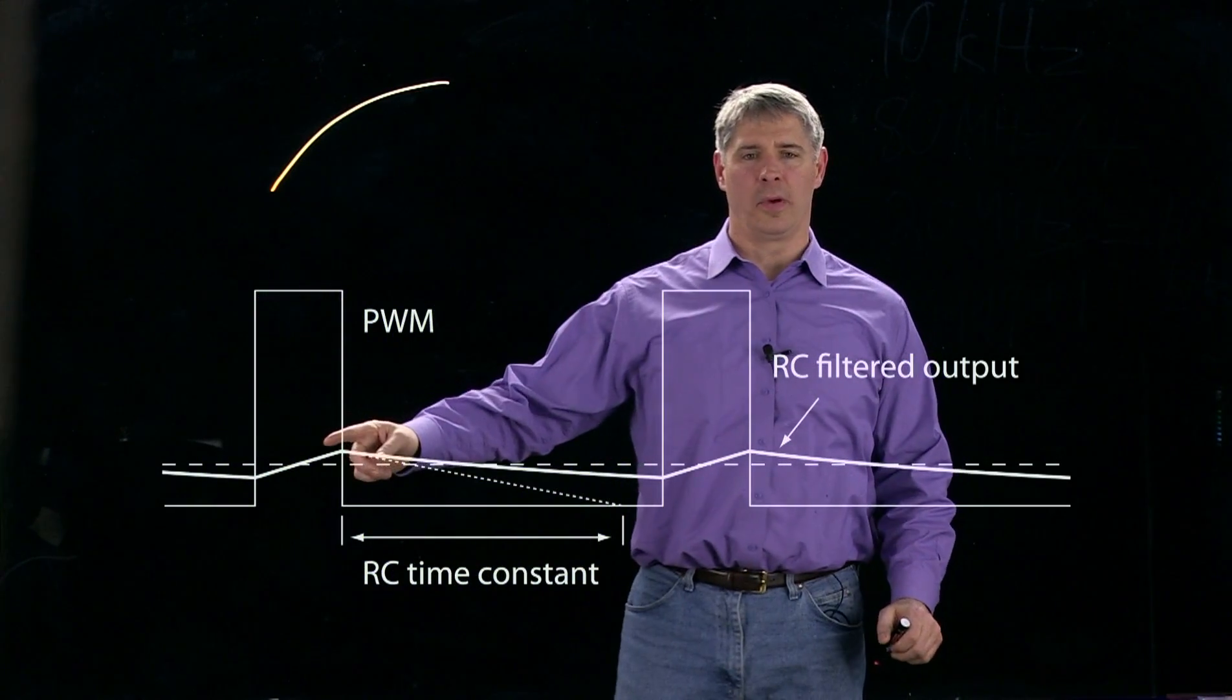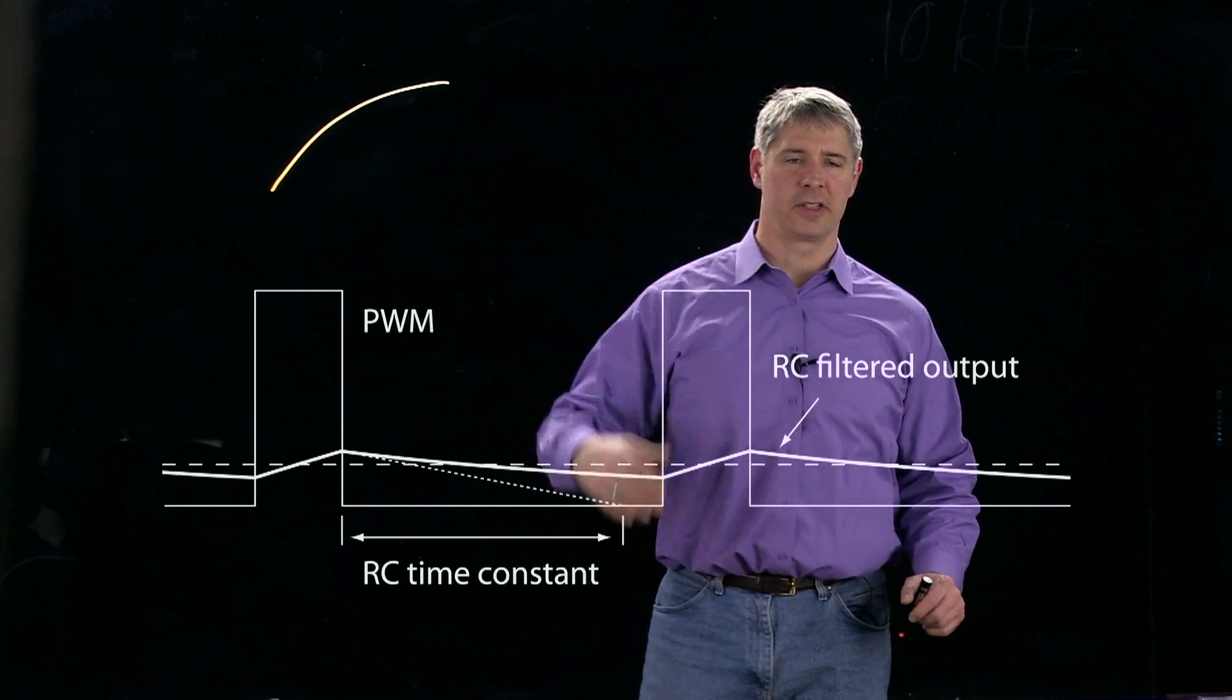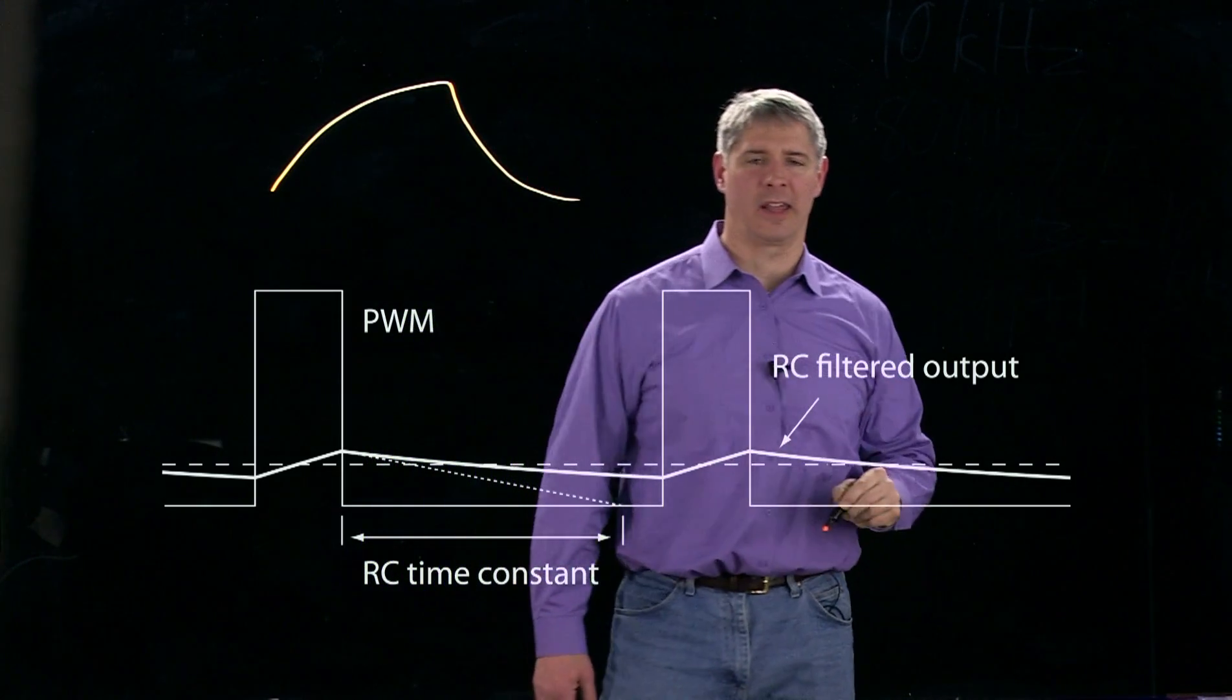And then when the voltage drops low again, then it charges down or discharges, again, according to a first order exponential. So it looks something like that.